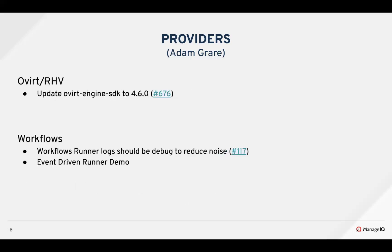Next slide. For oVirt and Engine, Keenan updated the oVirt Engine SDK to 4.6.0, which is a good way to get us up to date as well as to support Ruby 3.3. For workflows, we dropped the log level on event logs to debug so that we can reduce the noise in the logging. Next slide — we'll have a couple of demos for the event-driven workflows, which was added a couple of sprints ago, but good to get some video evidence of what was changed.